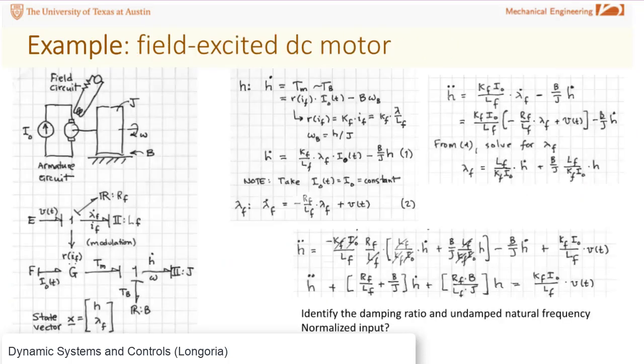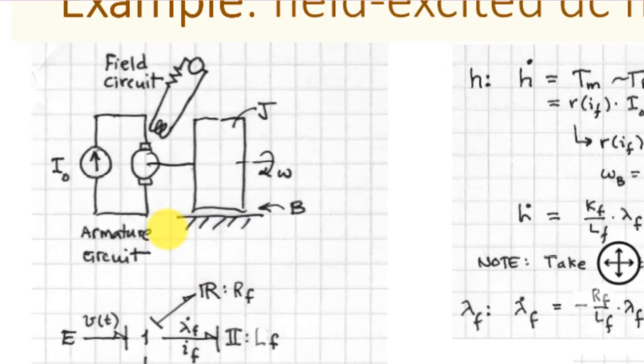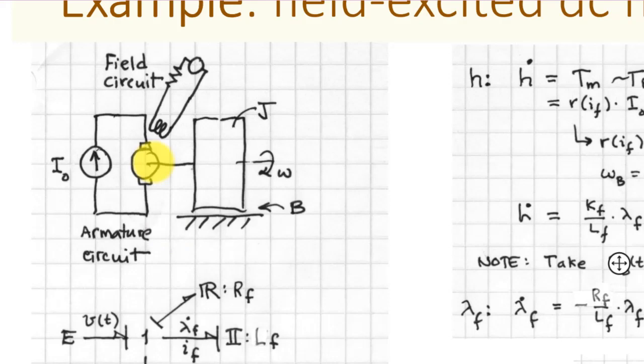Finally, I wanted to show you another model of a system that shows you that a second order system doesn't always have to be so obvious as to be made up of the typical I, R, and C elements. Here you have a model of a field-excited DC motor. See, here's the motor characteristic. Let me blow this up a little bit so you can see it better. You've got the motor.